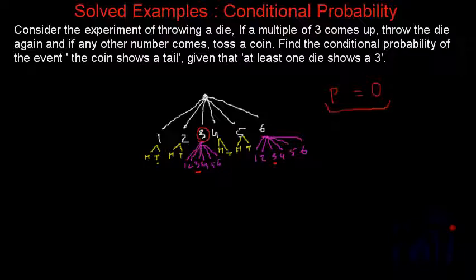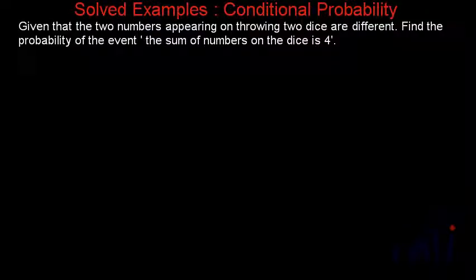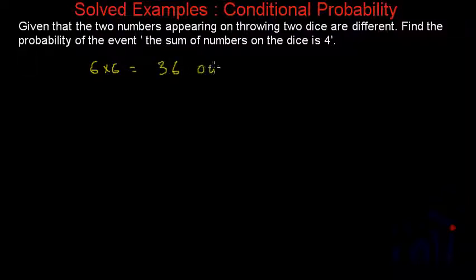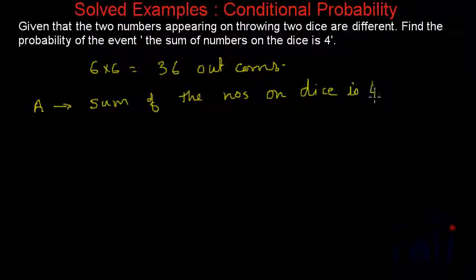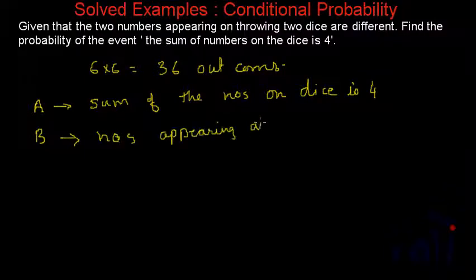And now let's solve the second problem. This problem statement states: given that the two numbers appearing on throwing two dice are different, find the probability of the event the sum of the numbers on the dice is four. So if you are throwing two dice, there will be total six multiplied by six, that is 36 outcomes. We have to find the probability of event A where the sum of the numbers on dice is four, and event B — which has already happened — is defined as the numbers appearing are different.